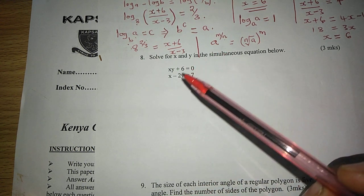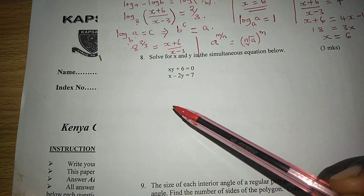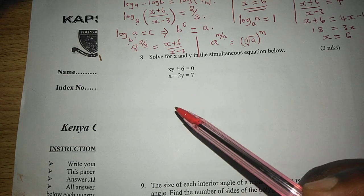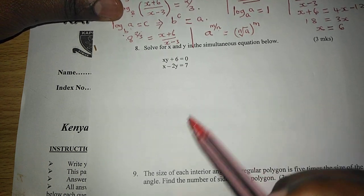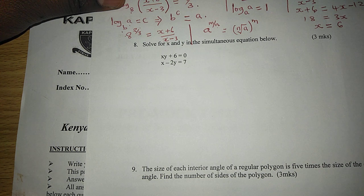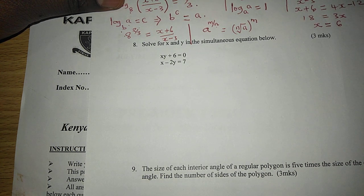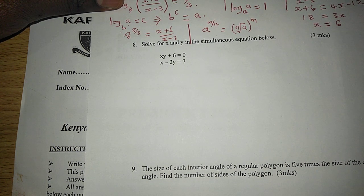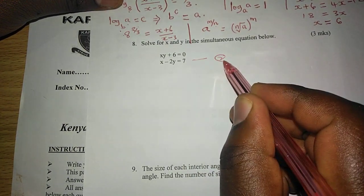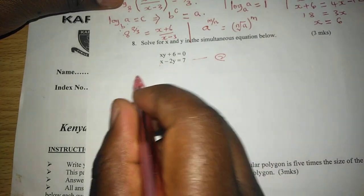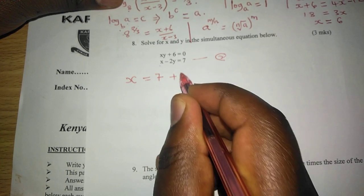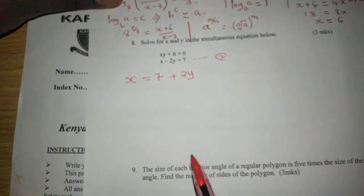Since this equation cannot be solved by elimination method, we can only apply substitution. We shall consider the variable which can be expressed easily in one of the equations. For that matter, we go to equation 2. In which case, we can express x to be 7 plus 2y. That is from equation 2.